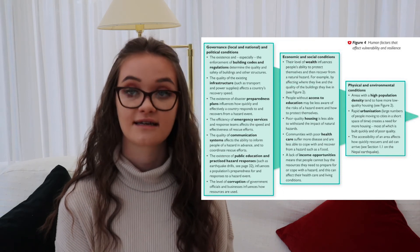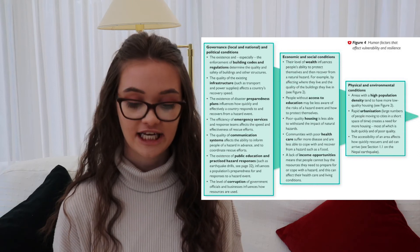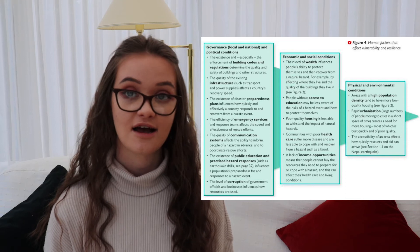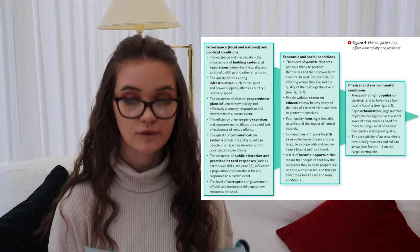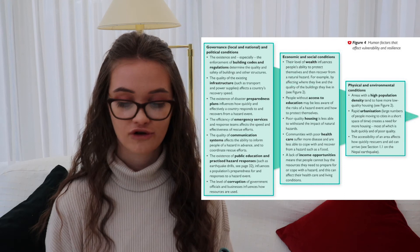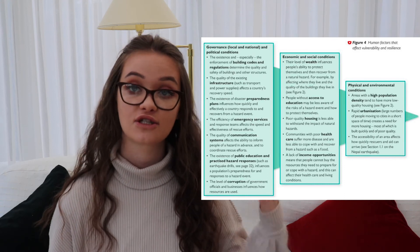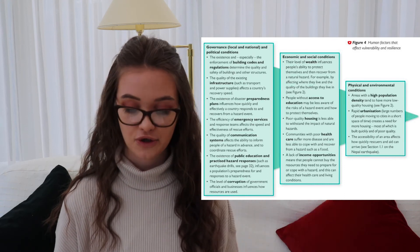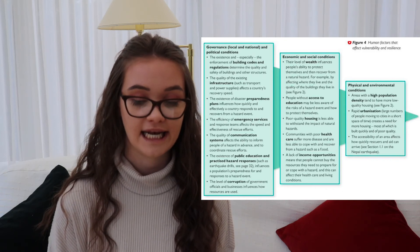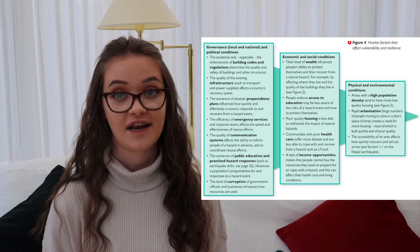Finally, physical and environmental conditions also matter. Areas with high population density tend to have more low-quality housing. Rapid urbanisation — large numbers of people moving from rural areas to cities — creates a need for more housing, so typically lower quality housing is built to accommodate new residents. The accessibility of an area also affects how quickly rescuers and aid can reach people in the event of a natural hazard.